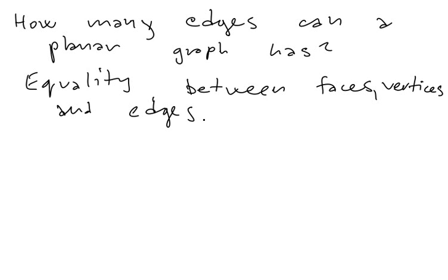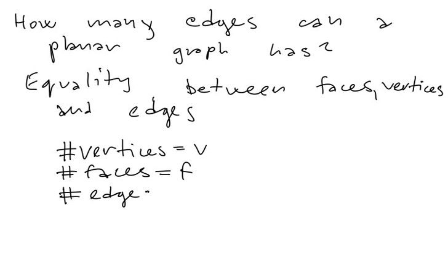So there is a theorem of Euler, which says that number of vertices that we denote v, number of faces we denote f, and number of edges we denote e. So what does it hold? That v plus f is always equal to e plus 2. So this is the theorem of Euler.